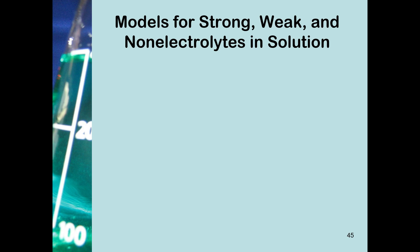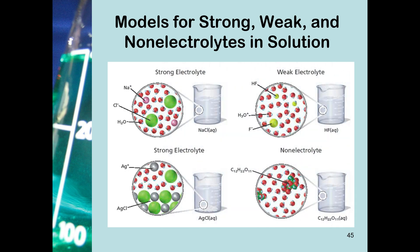When talking about strong, weak, and non-electrolytes in solution, we need to picture what's going on. As a reminder from a previous section, when we have a strong electrolyte, we have many ions in solution. This could be ionic compounds that have broken apart, or molecular substances that ionize and form ions in solution. The difference between a strong and weak electrolyte has to do with how many ions are in solution, and how many molecules are left whole without forming any ions.